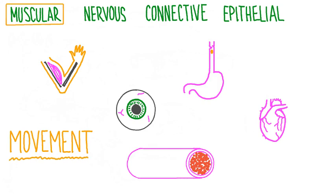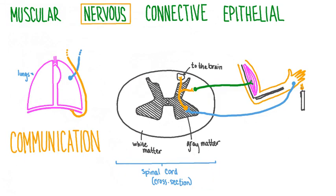The main function of muscular tissue is movement. Any part of the body that can move or change shape likely has some muscular tissue associated with it. Skeletal muscle controls the movement of our body. Other important examples include the heart, which rhythmically contracts and relaxes to pump blood; the digestive tract organs, which move and mix food; tiny muscles within the eye controlling the pupil size and lens thickness; and muscles within blood vessels that adjust blood flow and blood pressure.